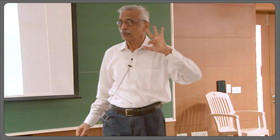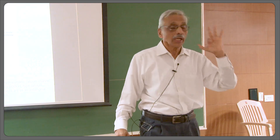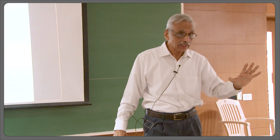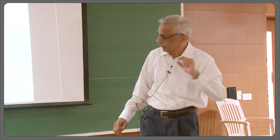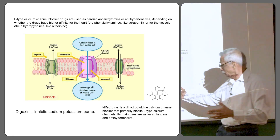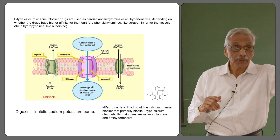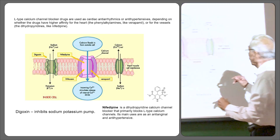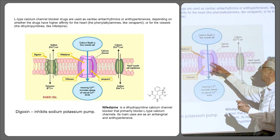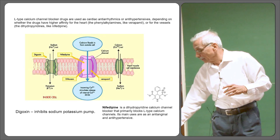There are three important classes of drugs used for hypertension in clinical practice, and right now we are introducing calcium antagonists. One such drug is nifedipine — a dihydropyridine calcium antagonist — which acts on the DHPR calcium ion channel. Other forms include verapamil. These are all different types of calcium antagonists available in the market.